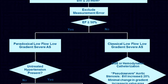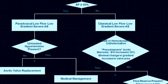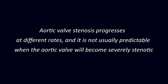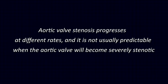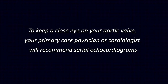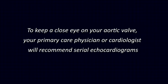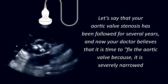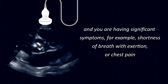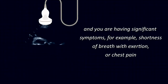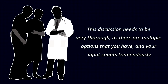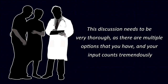If your aortic valve is not significantly stenotic and you do not have symptoms, your cardiologist will follow it for some time with serial echocardiograms, as aortic valve stenosis progresses at different rates and it is usually not predictable when it will become severely stenotic. If it is severely narrowed and you're having significant symptoms — for example, shortness of breath with exertion or chest pain — your physician believes it is time to fix the aortic valve. This discussion needs to be very thorough, as there are multiple options and your input counts tremendously.